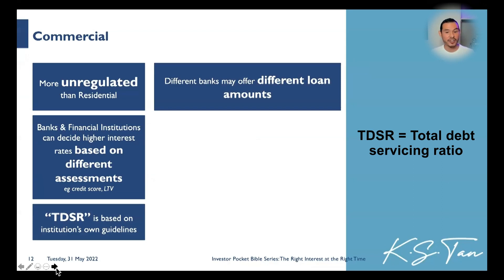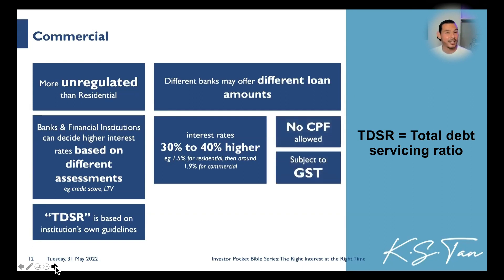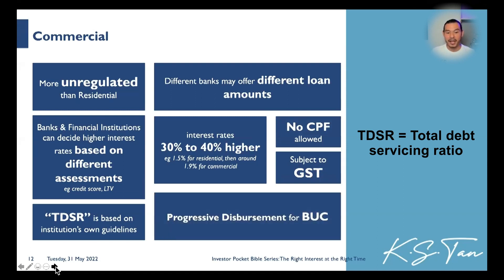Different banks may offer different loan amounts, so it is highly uncertain. Interest rates are also higher — about 30% to 40% more than residential rates. Typically, if you are at about 1.5% for residential loans, commercial loans should be about 1.9%. Also, we can't use CPF to repay the mortgage for commercial property. The sale and purchase of commercial property will be subjected to GST as well. And if you are buying a BUC commercial property, it follows the progressive payment schedule.